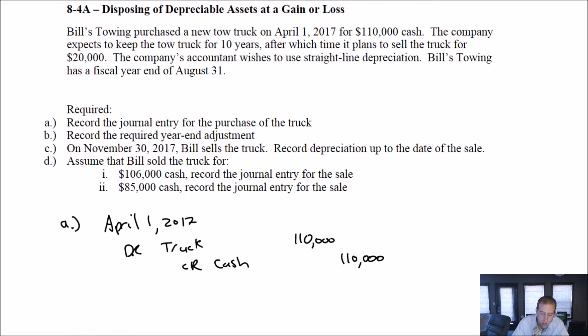Company expects to keep the truck for 10 years, after which time it plans to sell it for $20,000. Okay, so let's see. $110,000 is our cost. Our residual value is $20,000. So our depreciable cost is $90,000. Again, cost minus residual value equals depreciable cost, $90,000. And we're going to depreciate that $90,000. It's straight line. The company's accountant wishes to use straight line. So we're going to do that over 10 years. So that's at a rate of $9,000 per year. Okay, so we've got our amortization rate or our depreciation rate.